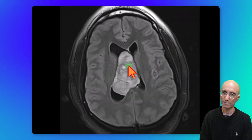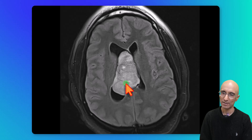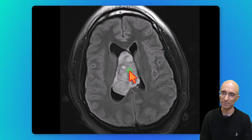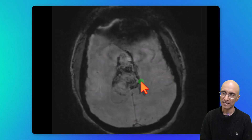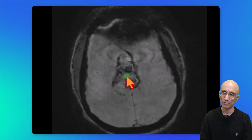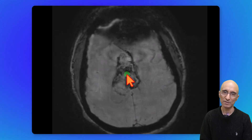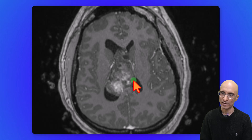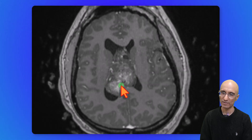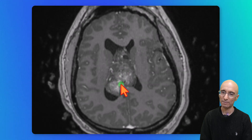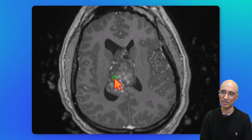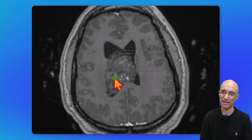On the axial FLAIR images, the lesion is mildly hyperintense compared to gray matter, clearly demonstrating the attachment to the septum pellucidum. On the axial SWI images, we can see multiple foci of signal dropout, likely representing calcifications versus microhemorrhages. Following administration of intravenous contrast, we can see multiple regions of heterogeneous enhancement within the mass.